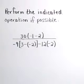Perform the indicated operation if possible. We have the quotient of 30 times negative 1 minus 2 and, in the denominator, negative 9 times the quantity 3 minus negative 2 minus 12 times negative 2.